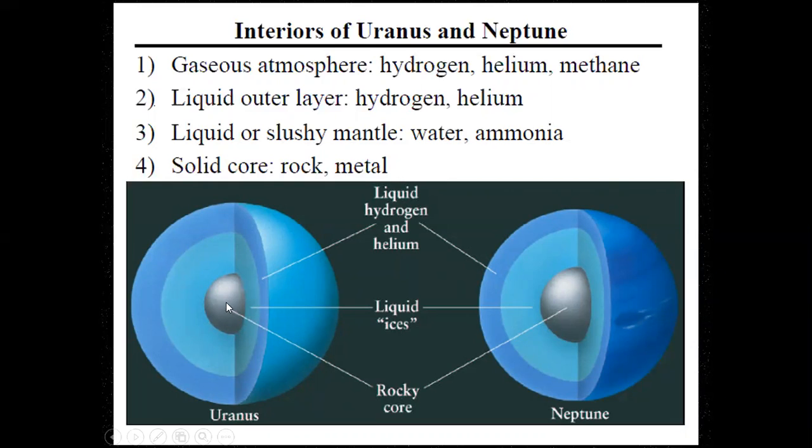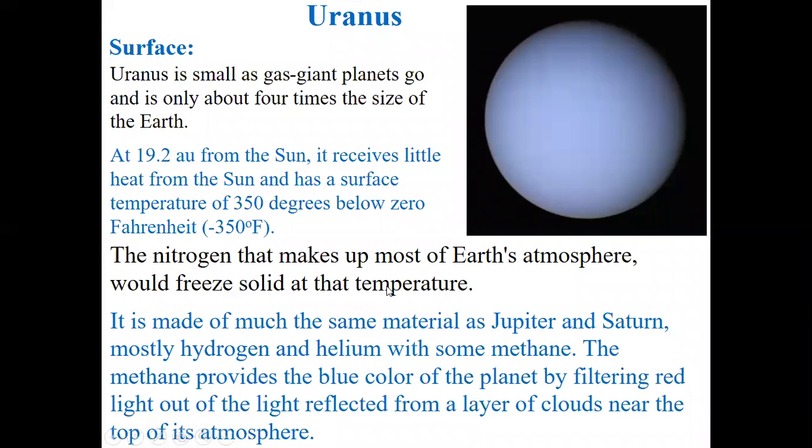If you want to land on Uranus and Neptune, I don't think you can land over here. It's gassy. Then comes a liquid piece and then the solid core. The surface Uranus is small as gas giant planets go. With the gassy planets, they are big compared to terrestrial planets. However, there's a limit for that size.